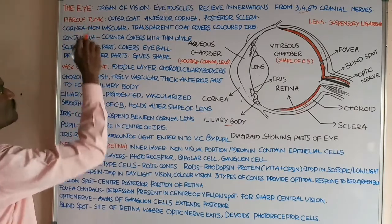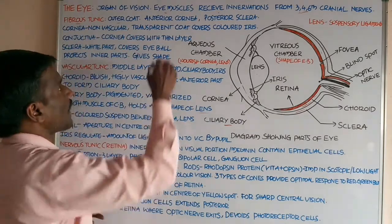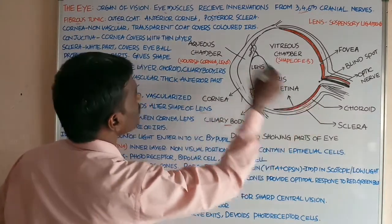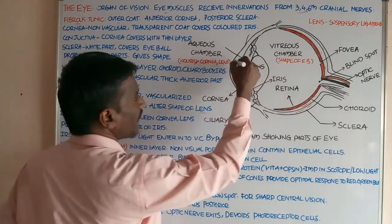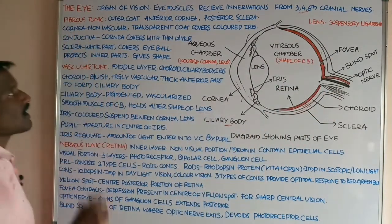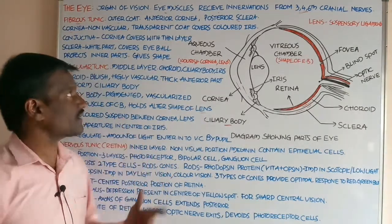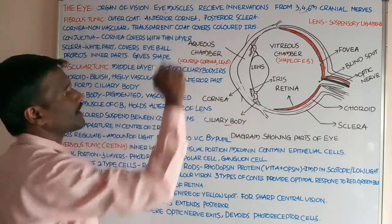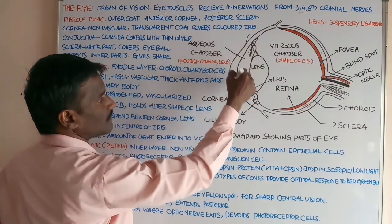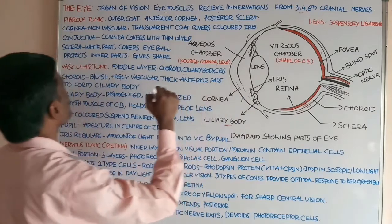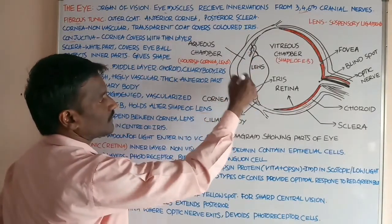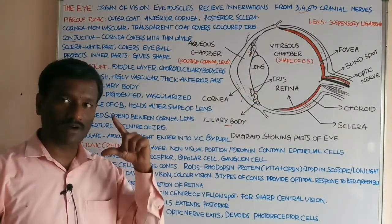The fibrous tunic is the outer coat of the eyeball, consisting of the anterior cornea and the posterior sclera. The cornea is the non-vascular, transparent part that covers the colored iris. The cornea is covered by a thin layer called the conjunctiva.